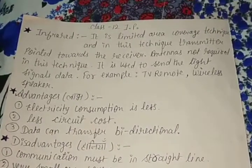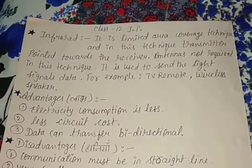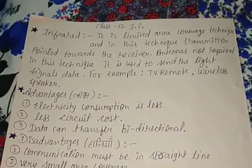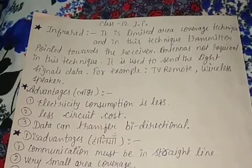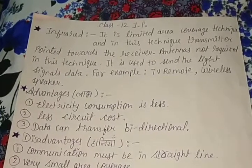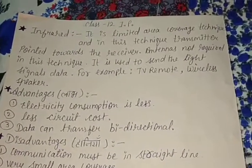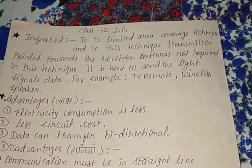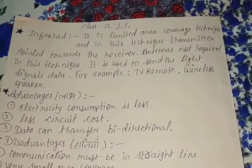The TV remote, wireless speakers, and the wireless mouse also work on this same technique. The mouse sends light signals which are caught by the monitor receiver, and the monitor acts as the remote control for the mouse. However, infrared rays cover a very limited area — you cannot cover a large area with infrared rays.